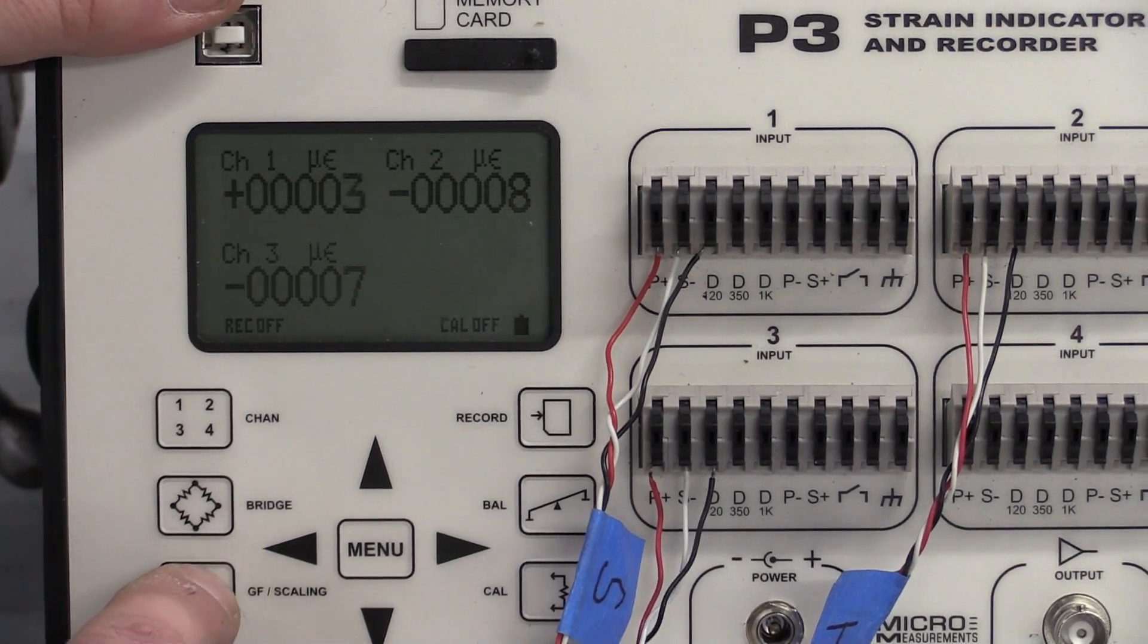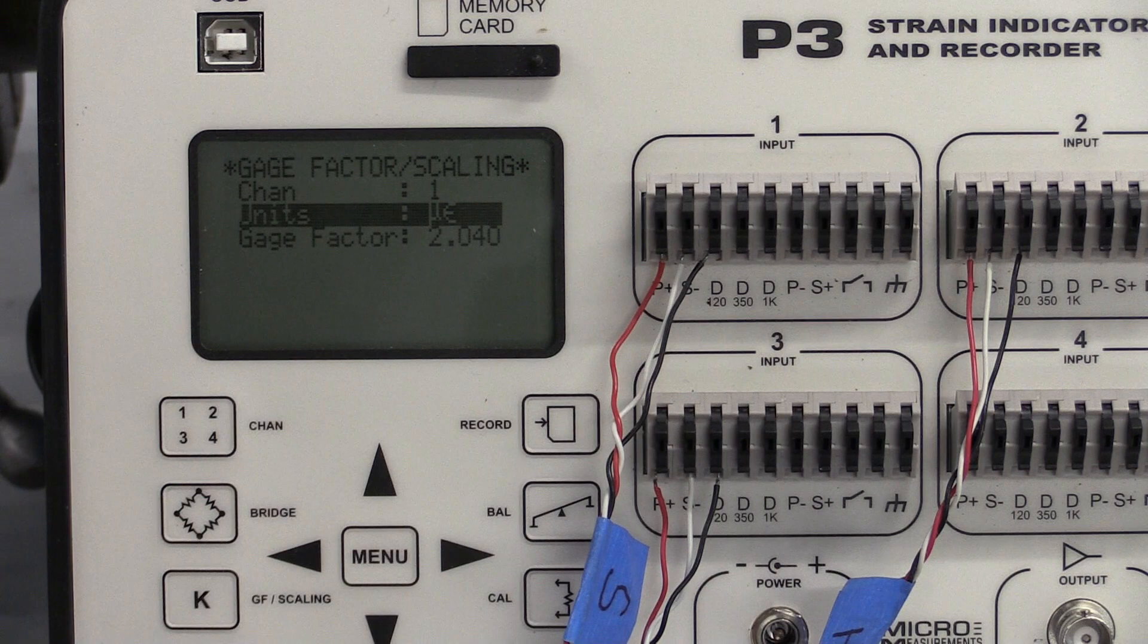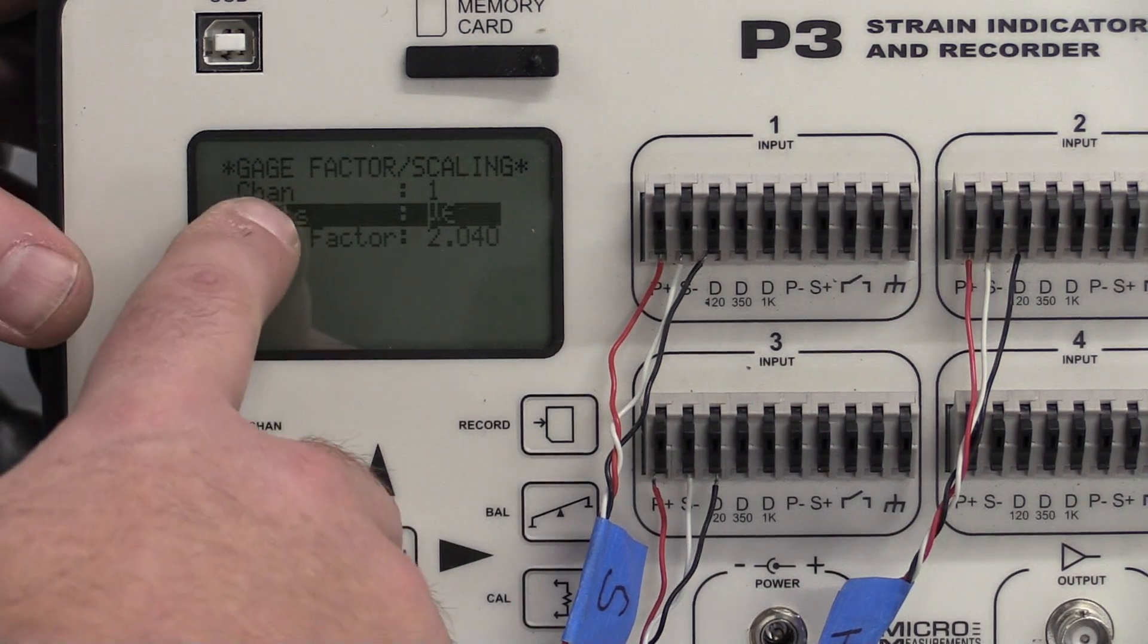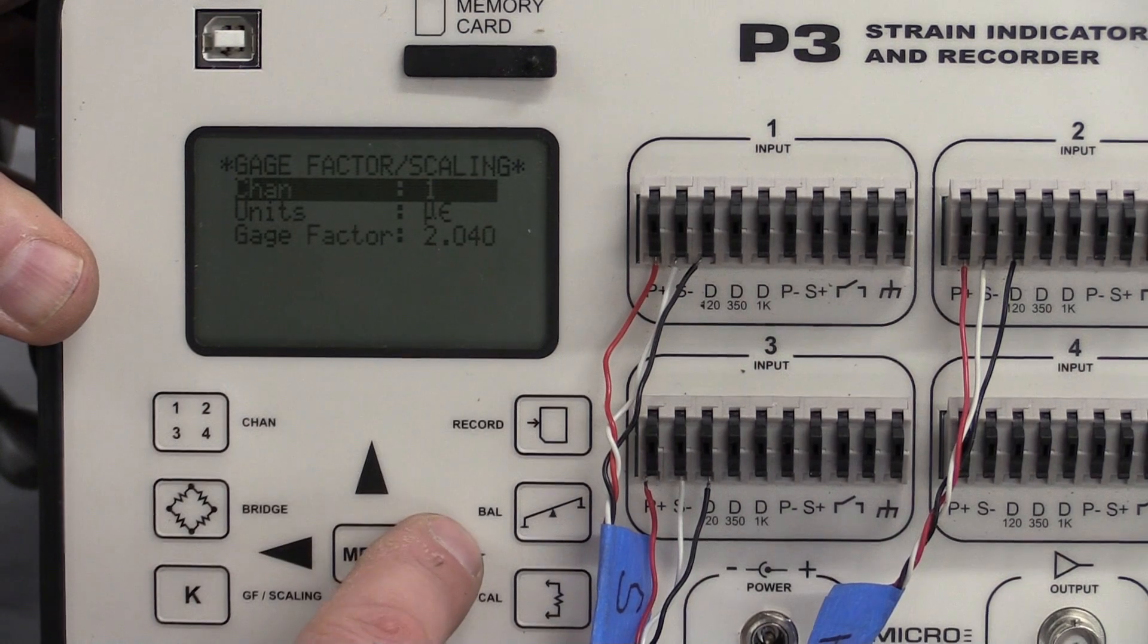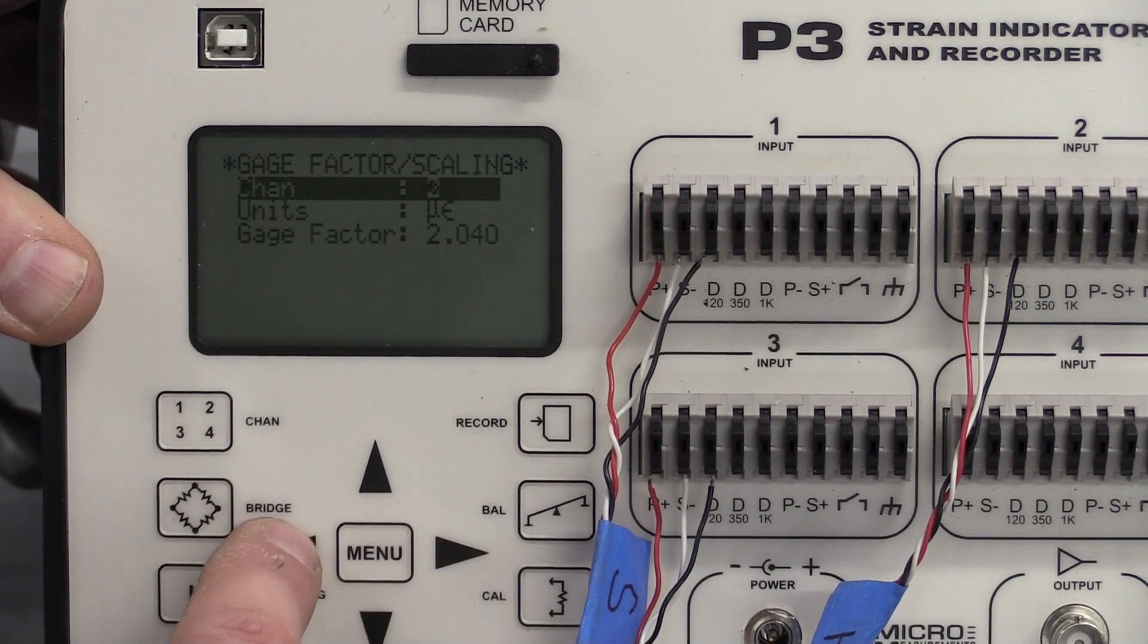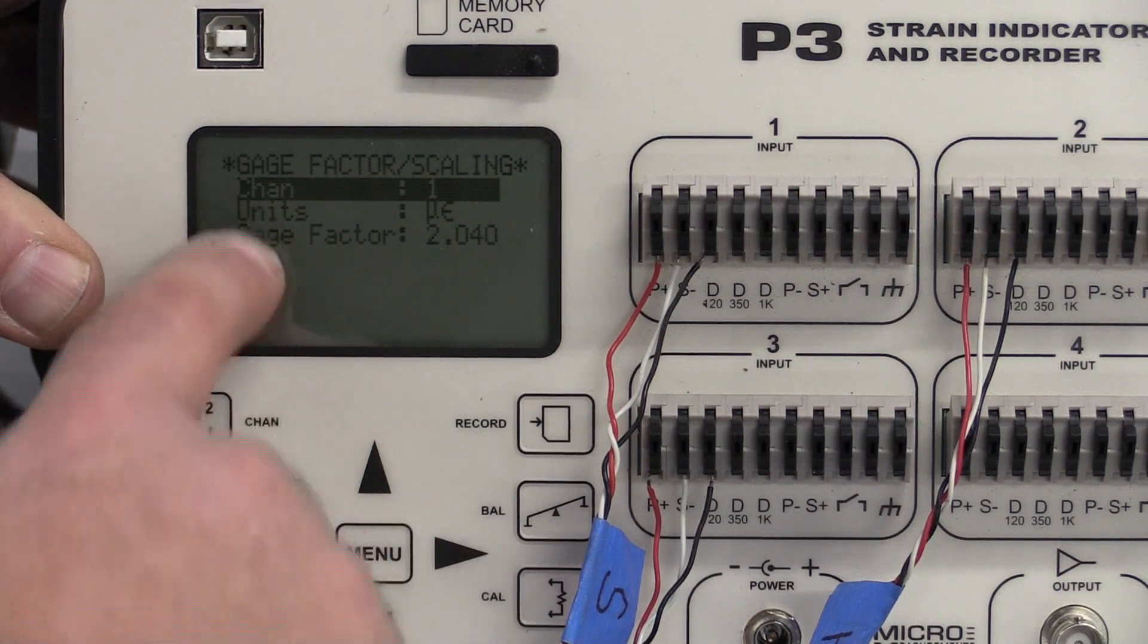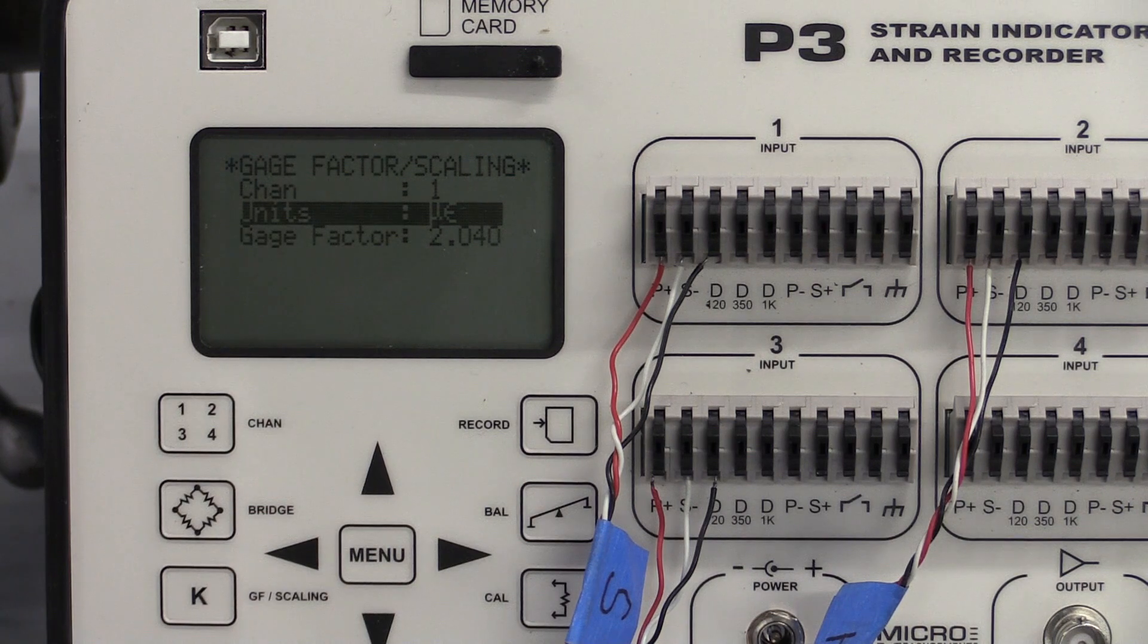So what we want to do next is hit K and K is going to take us to the screen that's going to let us adjust for the different units we want to measure as well as the strain gauge factors for the strain gauges. So let's look up here. If I cursor up here I have channel and I can change from channel 1 to 2 to 3 and I can see the different channels happening there. I'm going to go to channel 1 and I'm going to come down on channel 1.